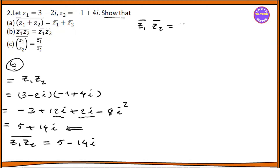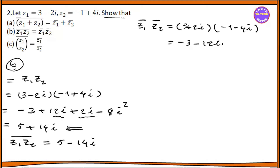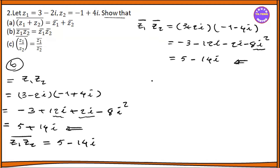And 3 plus 2i. So 2i minus 1, minus 4i. That's right. Here we have minus 3, minus 12i. Here we have minus 2i. Here we have minus 8i squared. So minus 3, plus 8i squared, plus 14i. So i squared is minus 1, so we get plus 5. Minus 12i, minus 2i, minus 14i.